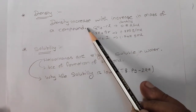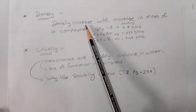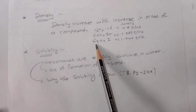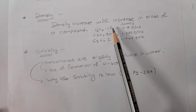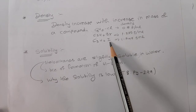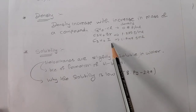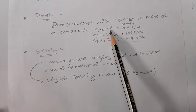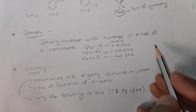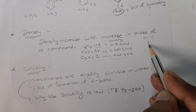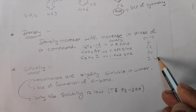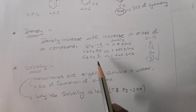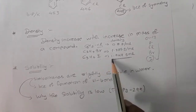Density is directly related to mass, meaning density increases with increase in mass of a compound. For compounds with the same alkyl group — say three carbons with the same hydrogens — but different halogens: chlorine, bromine, iodine. Since iodine is the biggest atom with greatest mass in group 17 (atomic size increases down the group: fluorine, chlorine, bromine, iodine), the iodo compound has the maximum density.